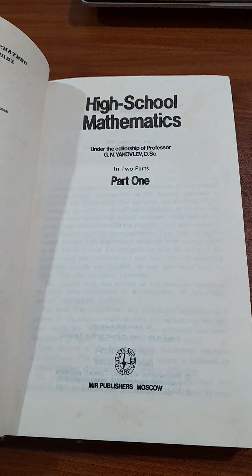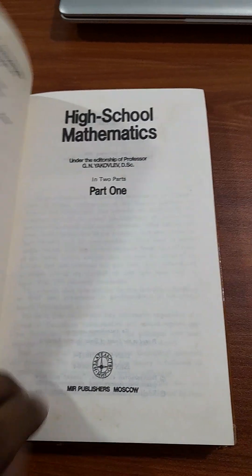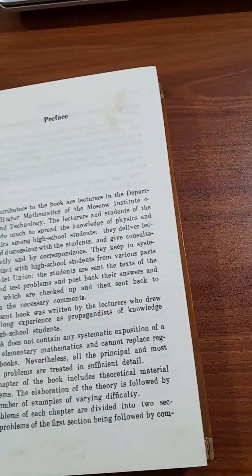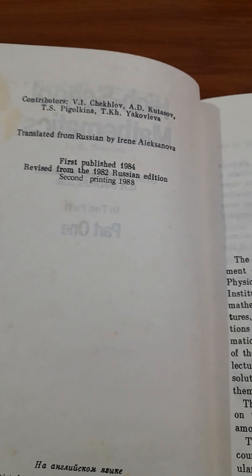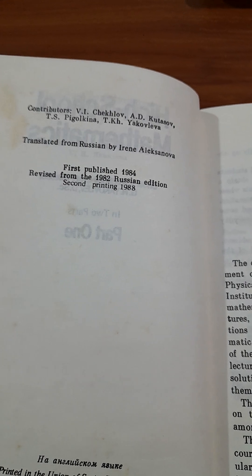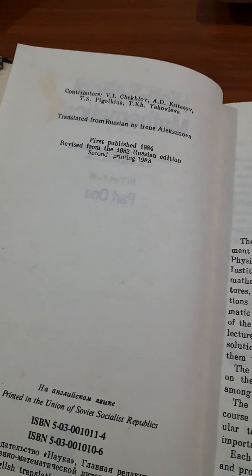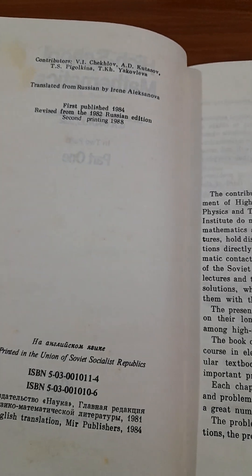What's special about this book? There are two parts. We have the list of contributors, including Chekhov, Kotkas, Gorelkina, and Yakovlev. This book is second printing 1988, originally published in 1984.